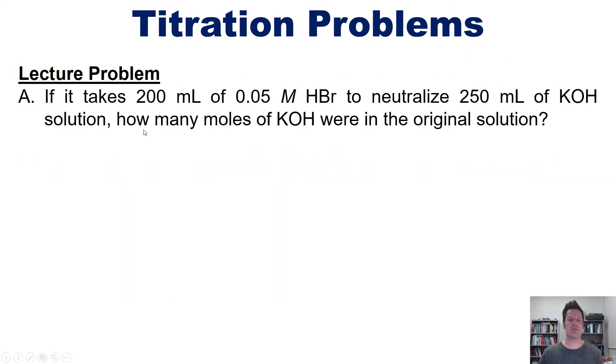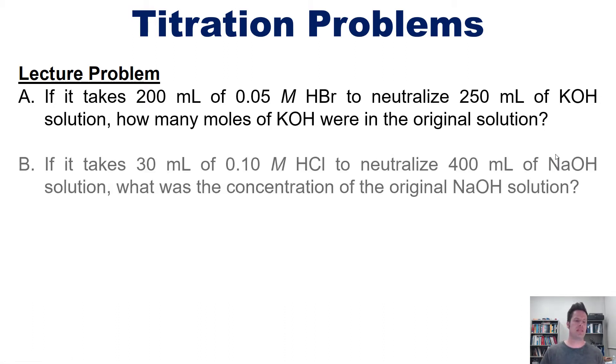If it takes 200 milliliters of 0.05M HBr to neutralize 250 milliliters of KOH, how many moles of KOH were present in the original unknown KOH solution? And separately, if it takes 30 mL of this concentration of HCl to neutralize 400 milliliters of sodium hydroxide, then what was the concentration of the original sodium hydroxide solution?